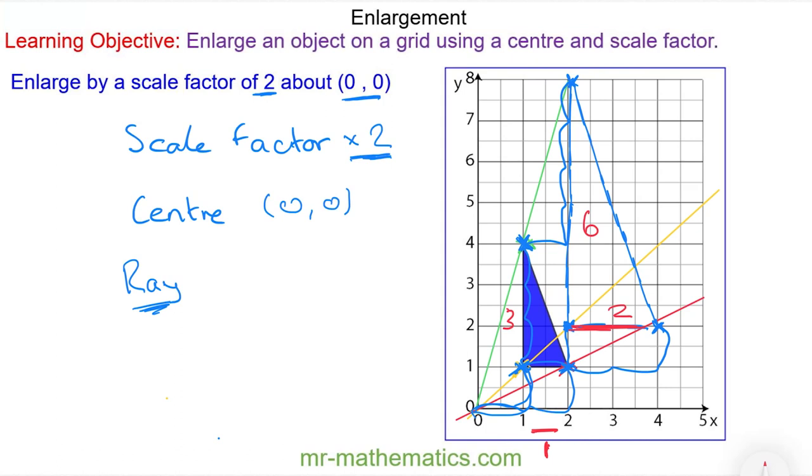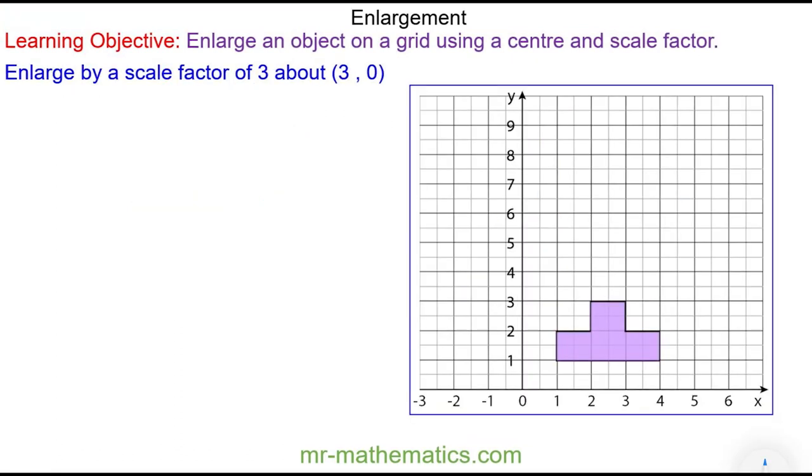Okay so let's try the next question. Do you want to make a copy of this object and the grid on squared paper, and then you can pause the lesson and resume it when you're ready. We know the image will be three times as big. The scale factor is 3 and the center is at (3,0), which is three across and zero up.